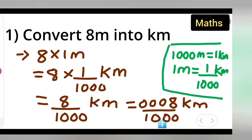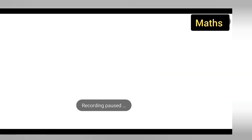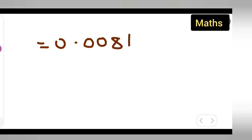Three zeros means you count 1, 2, 3 places for the decimal point. So your answer will be 0.008 kilometers. I hope you have understood how to convert 8 meters into kilometers. Thanks for watching — if you have any queries or doubts, you can comment below.